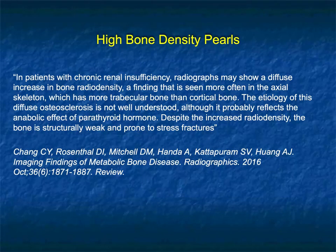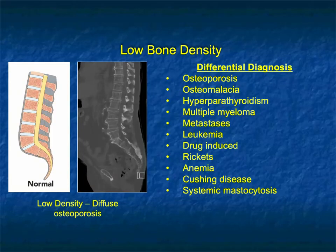Some pearls: in patients with chronic renal insufficiency, radiographs may show a diffuse increase in bone radio density, a finding more often in the axial skeleton which has more trabecular bone than cortical bone. The etiology of this diffuse osteosclerosis probably reflects the anabolic effect of parathyroid hormone. Despite the increased radio density, the bone is structurally weak and prone to stress fractures.